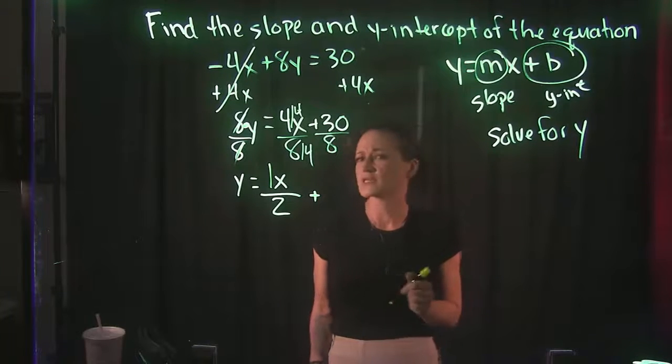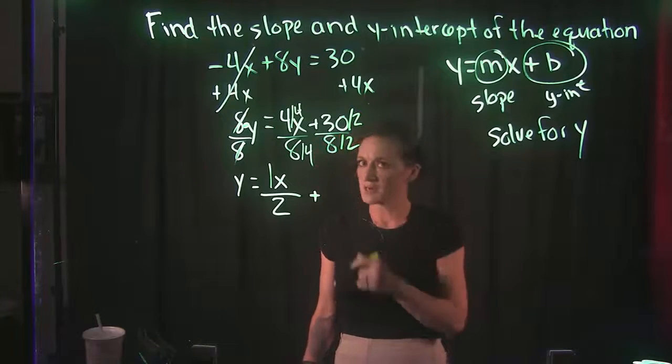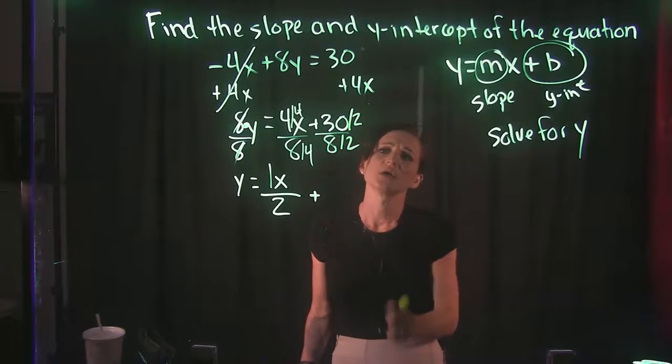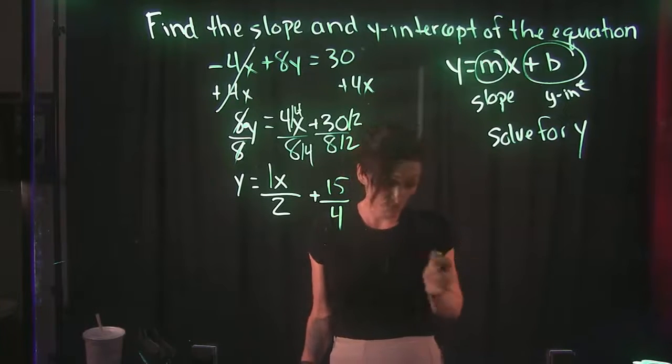Plus 30 over 8. Well, 30 over 8 does not divide out evenly, but we can reduce this once again by dividing out a factor of 2. 30 divided by 2 is 15 over 8 divided by 2 is 4.